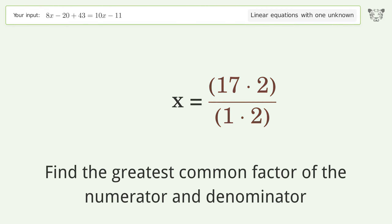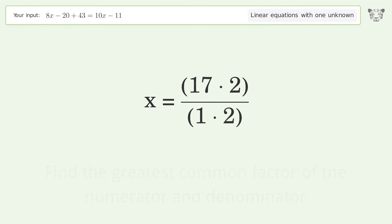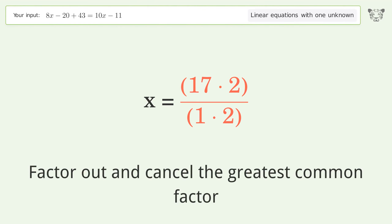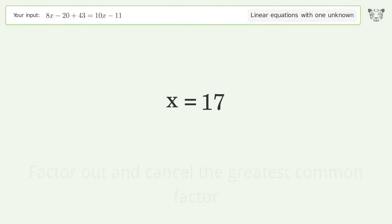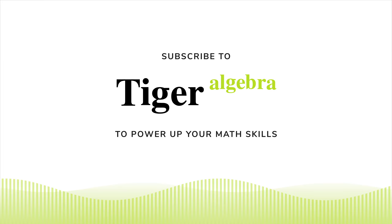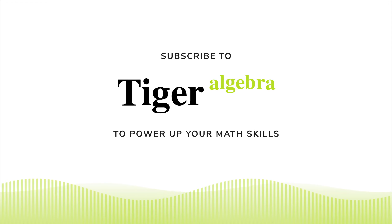Find the greatest common factor of the numerator and denominator. Factor out and cancel the greatest common factor. And so the final result is x equals 17.